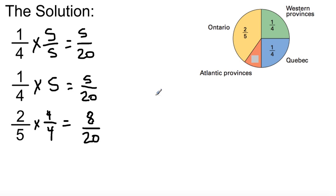So five over twenty plus five over twenty plus eight over twenty, and this will give you eighteen over twenty.